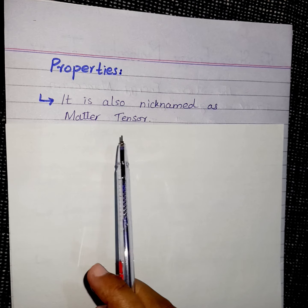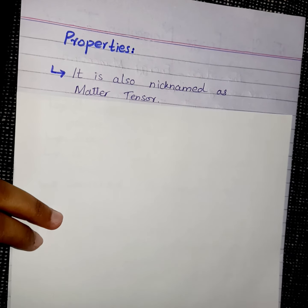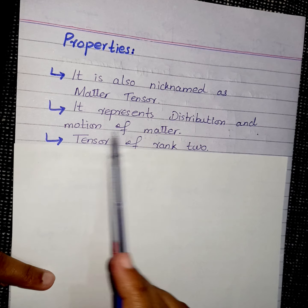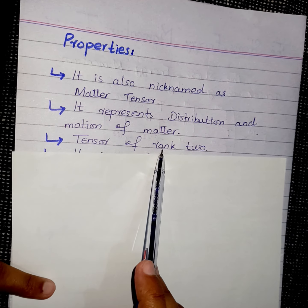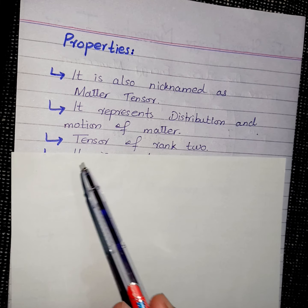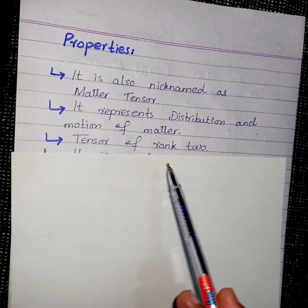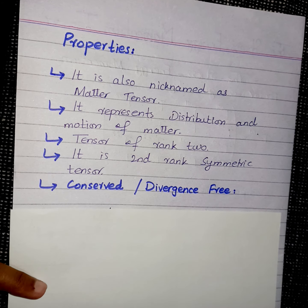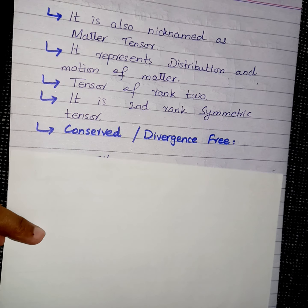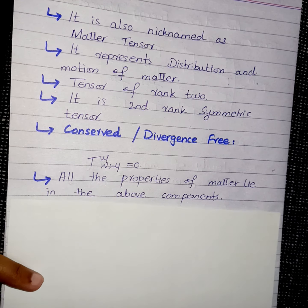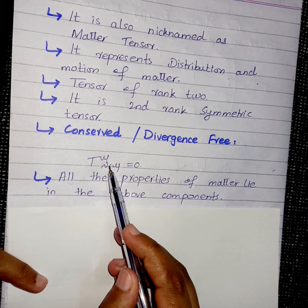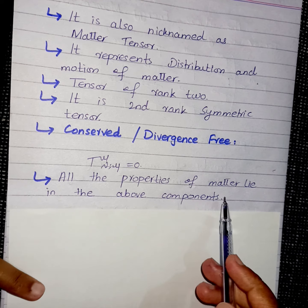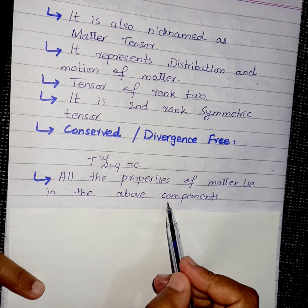Here are a few properties of the stress-energy momentum tensor. It is also known as the matter tensor, and it represents the distribution and motion of matter. It is a tensor of rank 2, since T mu nu has two indices mu and nu, and it is also a symmetric tensor. It is divergence-free and conserved — this is why Einstein liked it — meaning the covariant derivative of T mu nu with respect to mu equals zero. All the properties of matter lie in the above components.